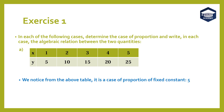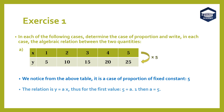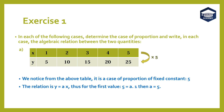We notice from the above table it is a case of proportion with fixed constant 5. The relation is y equals a times x. Thus for the first value, 5 equals a times 1, then a equals 5.